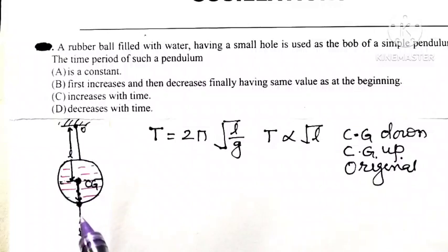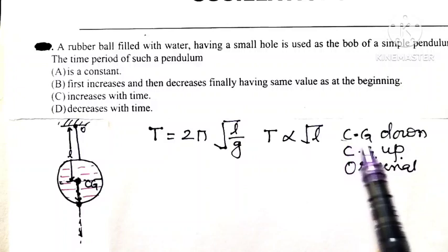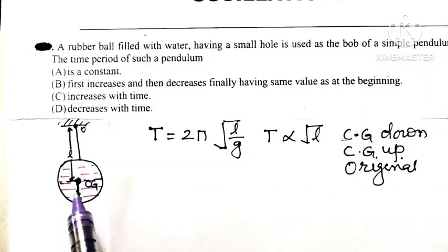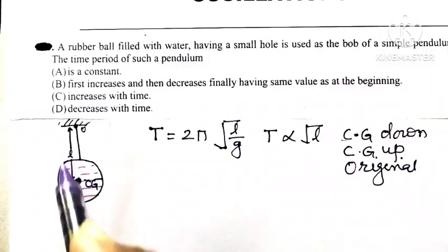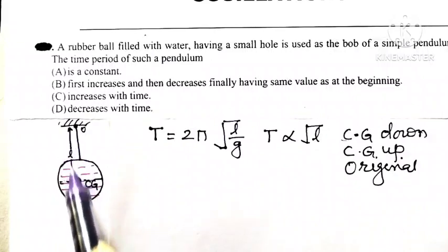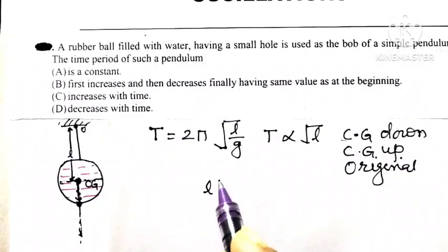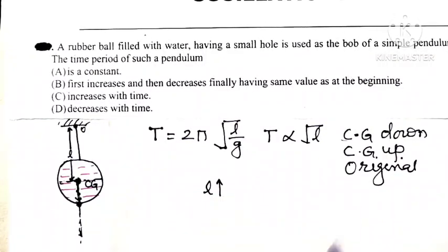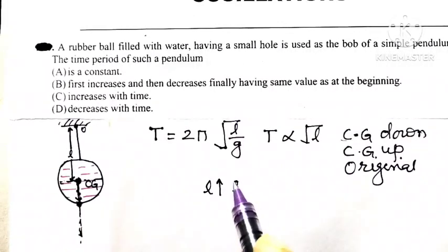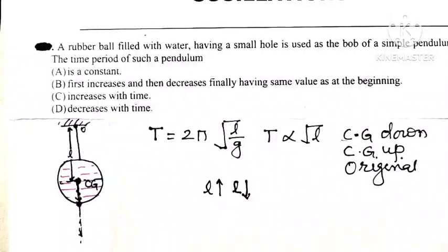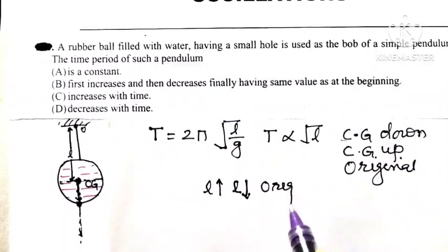So see here when water from the ball falls on the earth through that hole, initially center of gravity moves downward. Means what happens to length? Length of pendulum increases as center of gravity moves down. So initially length of pendulum goes on increases. Then center of gravity goes upward when length of pendulum goes on decreases.